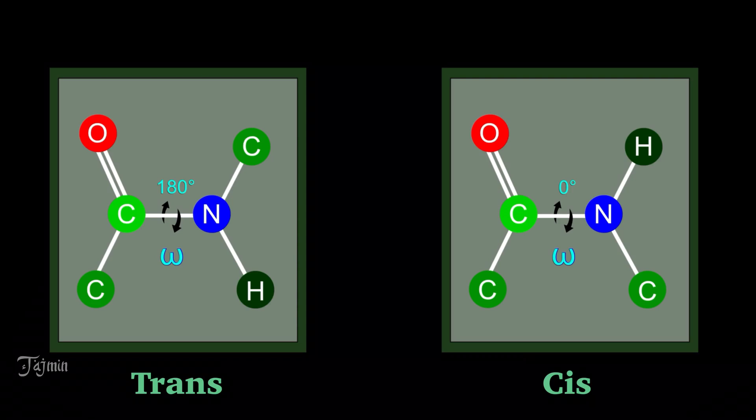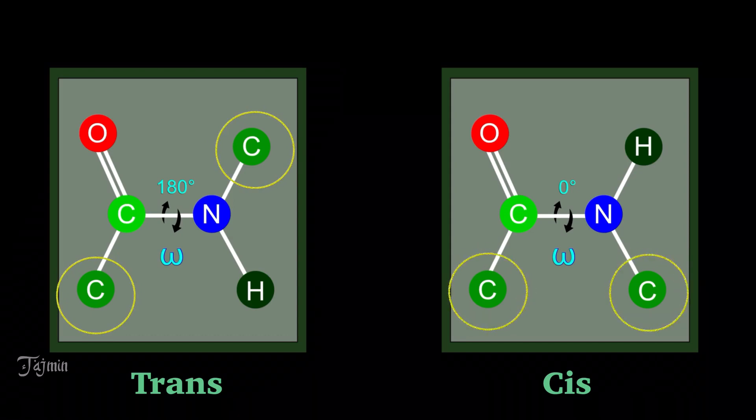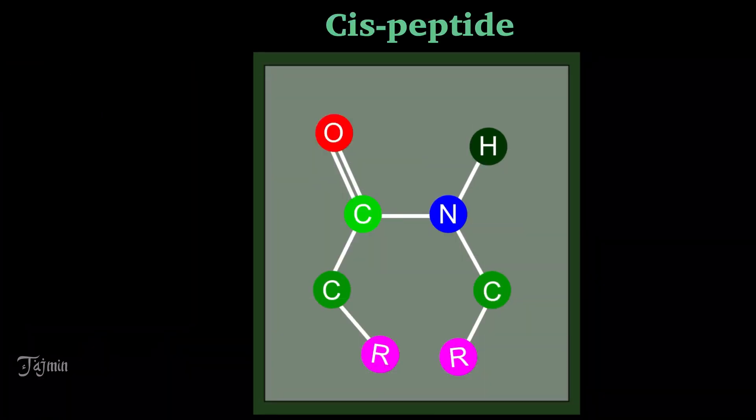In trans configuration, the C alpha atoms are on the opposite side to the peptide bond and in the cis configuration they are on the same side. Cis configuration is rare due to steric clash but there are few exceptions which we will see in the second part of this video.